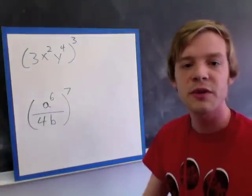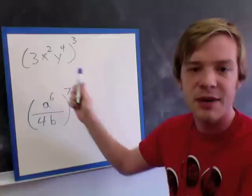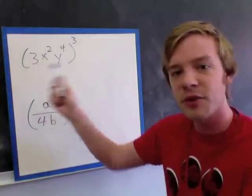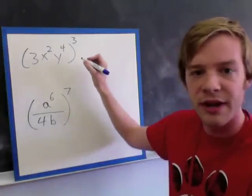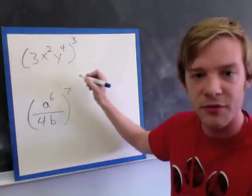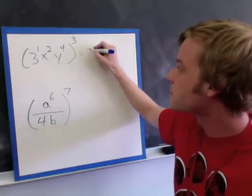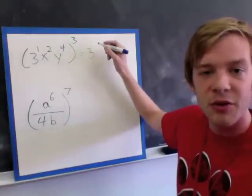Okay, so here we've got a coefficient, we've got a number in front of our variables. We have an x and we have a y. So we need to bring our power that's outside into everything that's inside the parentheses here. So we're going to have 3 to the power of 3, because remember this power here is 1. So we have our base of 3 and I multiply 3 times 1 to give me a power of 3.